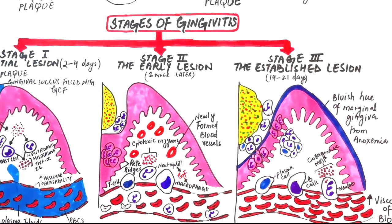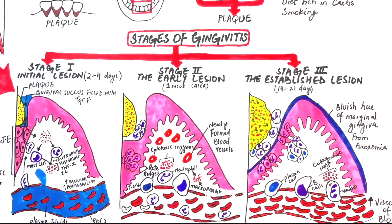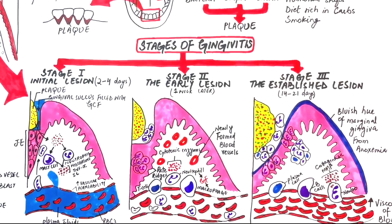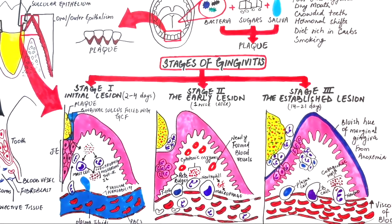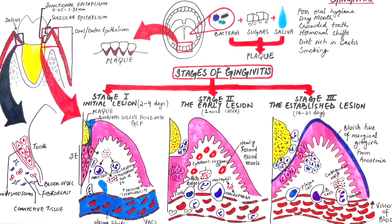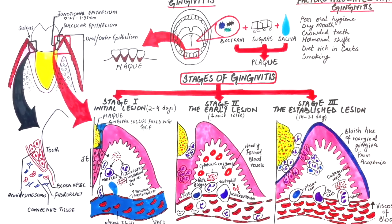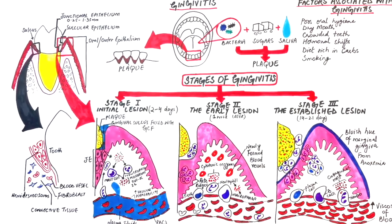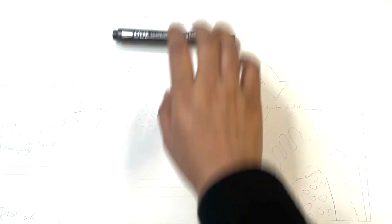This video is a continuation of the previous video where we discussed the first three stages of gingivitis. In this video we will talk about the fourth stage of gingivitis known as the advanced lesion, or the stage of periodontal breakdown, or simply periodontitis.